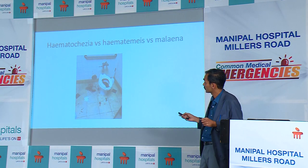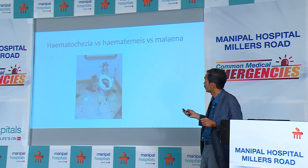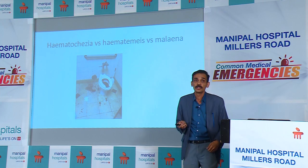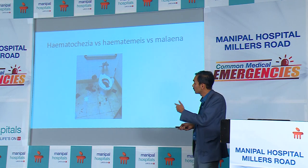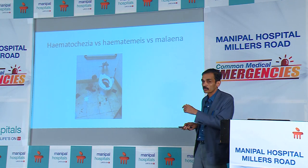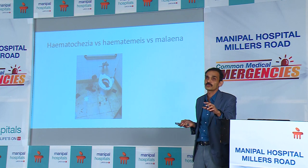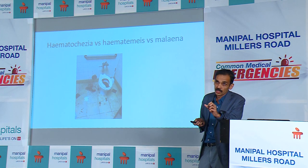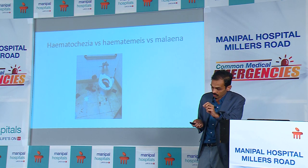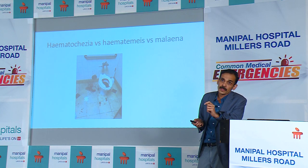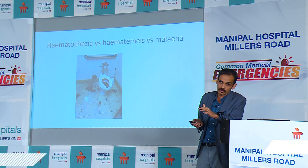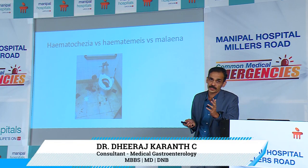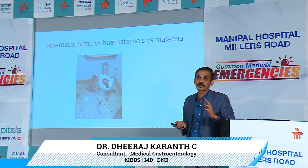How do patients present? It is either hematochezia, hematemesis, or melena. Patients nowadays come with photographs taken on their mobiles, but the most important history is whether there was dark tarry stool, whether there was fresh blood in the stools, or whether there was coffee ground vomitus followed by fresh blood. These things help us differentiate whether it is a purely upper GI bleed or a lower GI bleed.